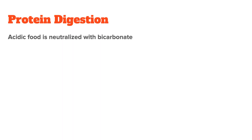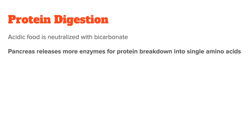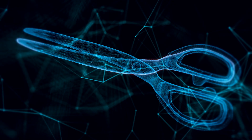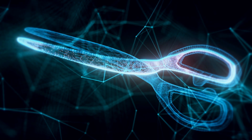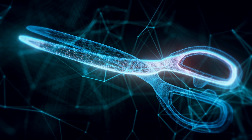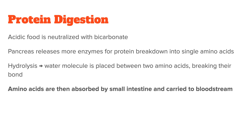Starting with protein: once the acidic food coming from your stomach reaches the small intestine, it has to be neutralized. This is done with the help of bicarbonate, which acts as an acid buffer. The pancreas also releases more digestive enzymes into the small intestine, so the pre-digested proteins can be further broken down into single amino acids by a process called hydrolysis. During hydrolysis, a water molecule is placed between two amino acids, which breaks their bond — like small scissors cutting protein chains into smaller pieces called peptides, then snipping off individual amino acids one by one. The amino acids are then absorbed by the small intestine and carried to the bloodstream, from where they can be sent to any cell throughout your body.